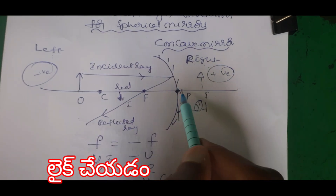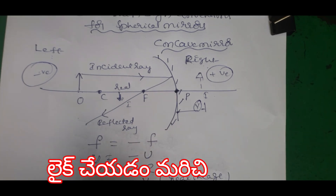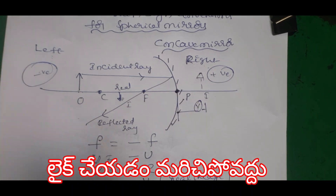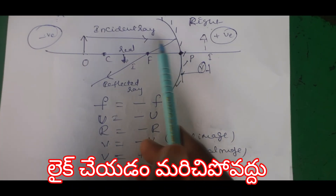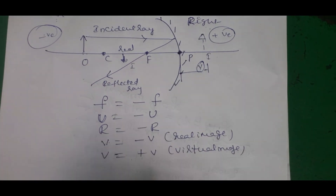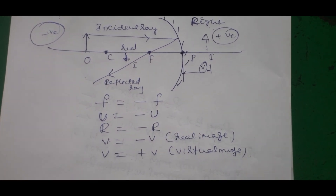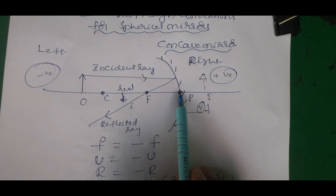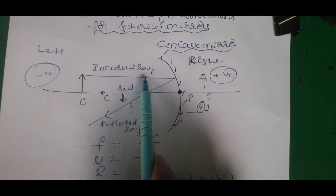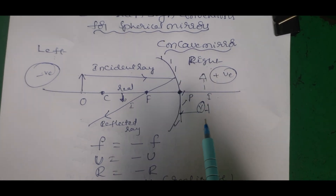Incident ray travels from left to right. If we measure distance in the incident ray direction, it is plus. Distances measured opposite to the incident ray are negative. Right side gives a virtual image - virtual image is positive. All distances must be measured from the pole. Distances measured opposite to incident ray are negative; distances measured along the direction of incident ray are positive.